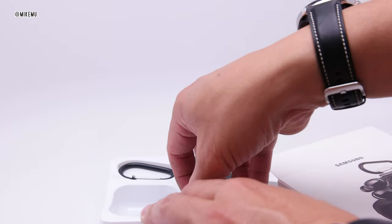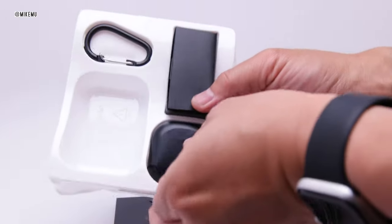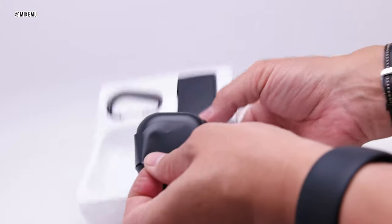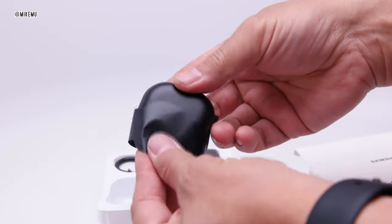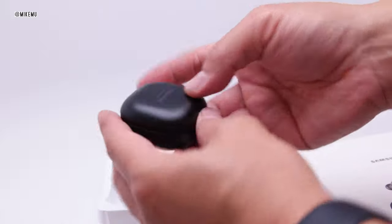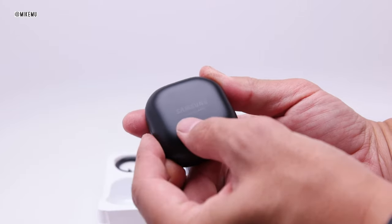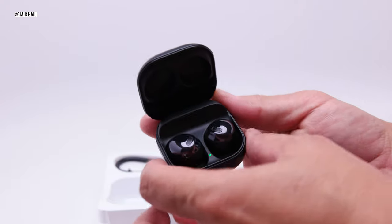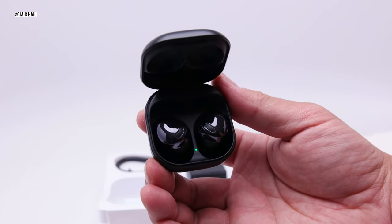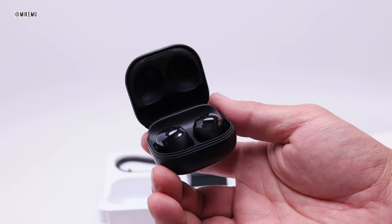Now onto the buds themselves. They themselves are actually protected a little bit from scratches already by this piece of paper, and here we have the Samsung buds. It says sound by AKG, and it looks like it already has the indicator light showing that it's been charging, already charged.